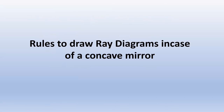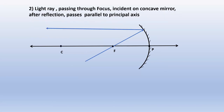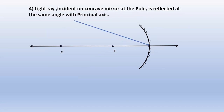Now let us revise the rules to draw ray diagrams in the case of a concave mirror. Rule 1: A light ray passing parallel to the principal axis, when incident on the concave mirror, passes through the focus after reflection. Rule 2: When a light ray passes through the focus, after reflection it passes parallel to the principal axis. Rule 3: When a light ray passes through the center of curvature, after reflection it retraces its path — it gets reflected in the same direction. Rule 4: When a light ray is incident at the pole, it gets reflected such that the angle between the principal axis and the incident ray equals the angle between the reflected ray and the principal axis — since the principal axis is the normal at the pole, the angle of incidence equals the angle of reflection.